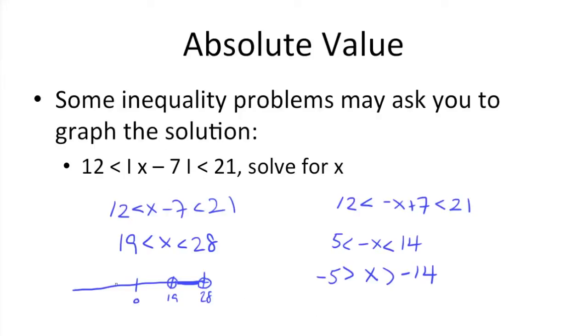Now, we know that the other answer is in between negative 5 and negative 14. And again, those numbers aren't part of the answer, so they need to be in open circles. And then we bold the number line in between.